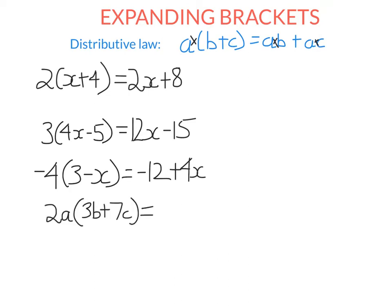Sometimes you'll have to expand brackets where there are a few different pronumerals or letters, but we're not going to do it any differently. We distribute 2a to 3b, so we go 2a times 3b. 2 times 3 is 6, then write the pronumerals. Then 2a times 7c — positive times a positive — 2 times 7 is 14, and then we just write the pronumerals. How easy is that?